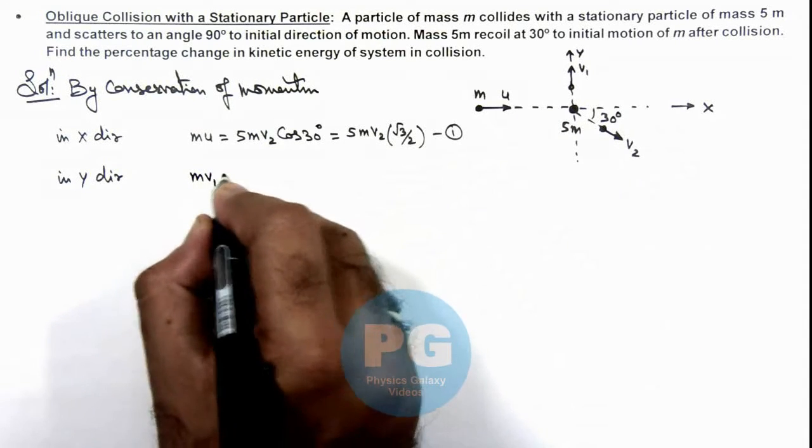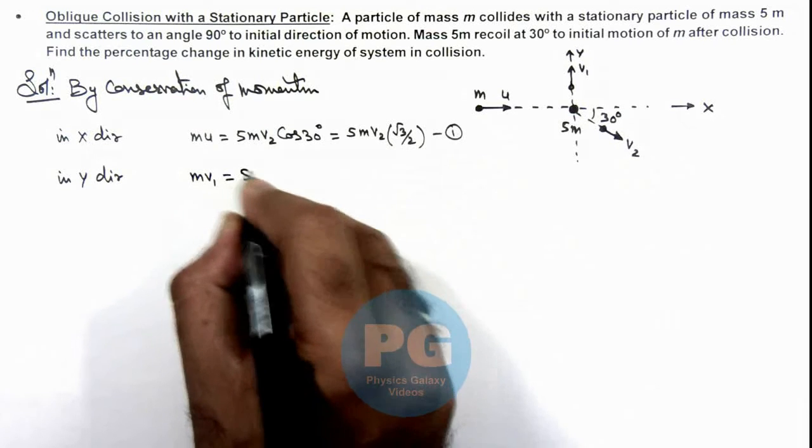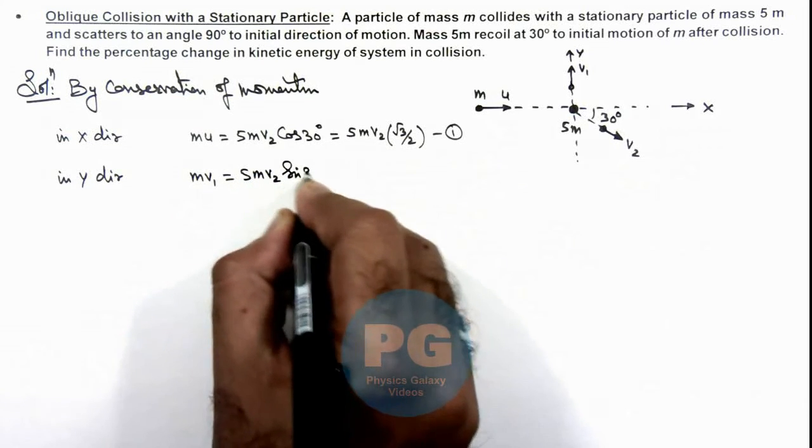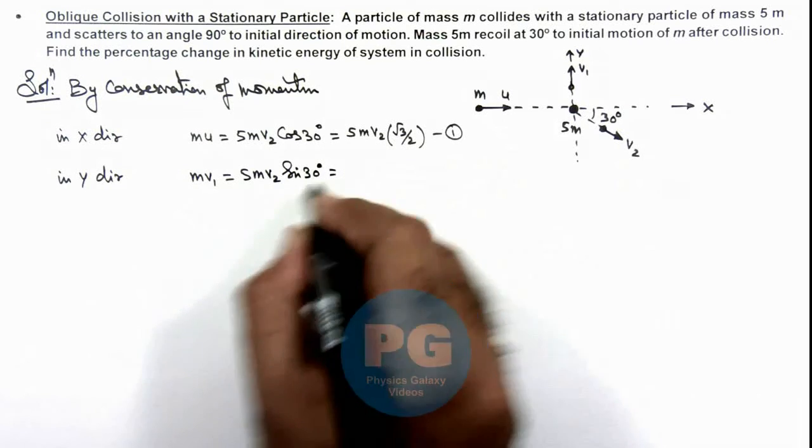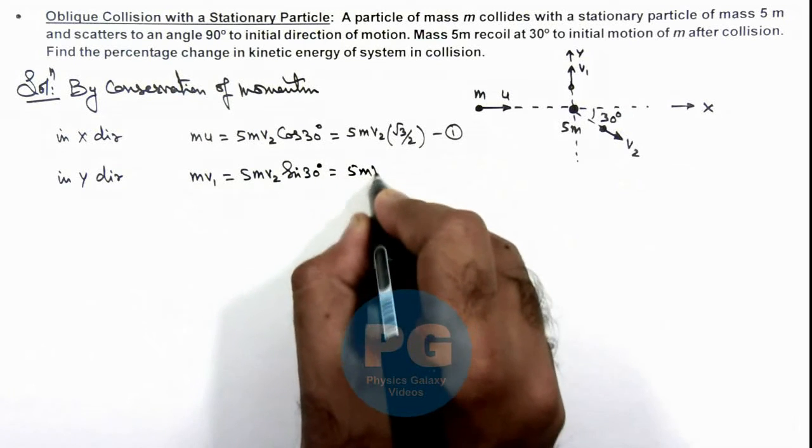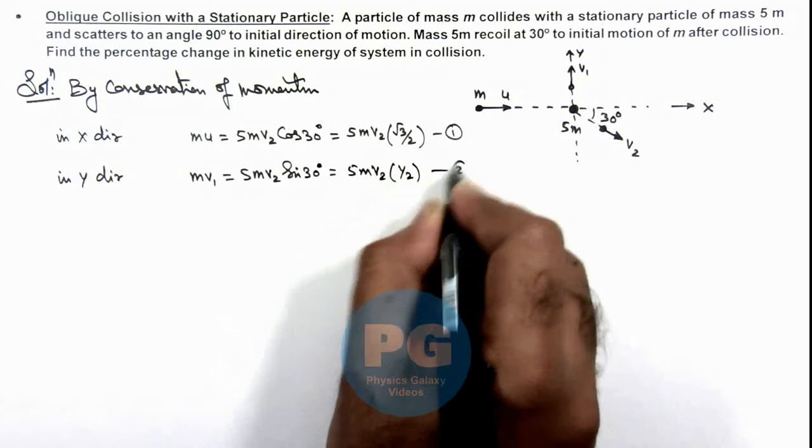So we can write m·v1 is equal to 5m·v2·sin(30°), which is equal to 5m·v2·(1/2). This is our second equation.